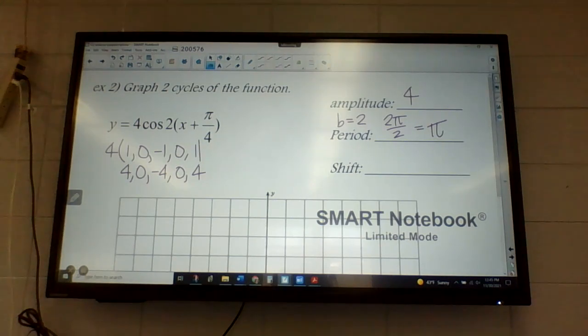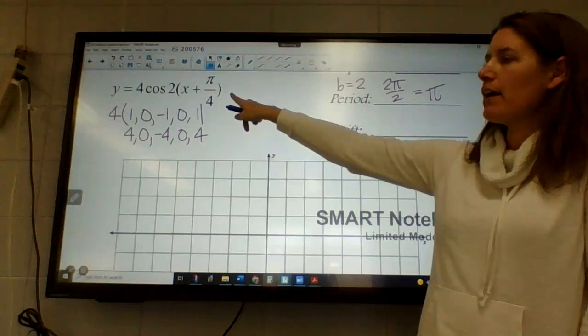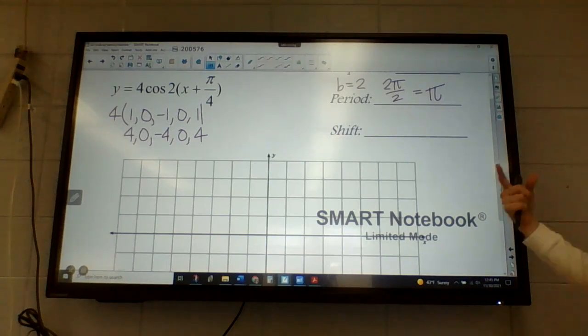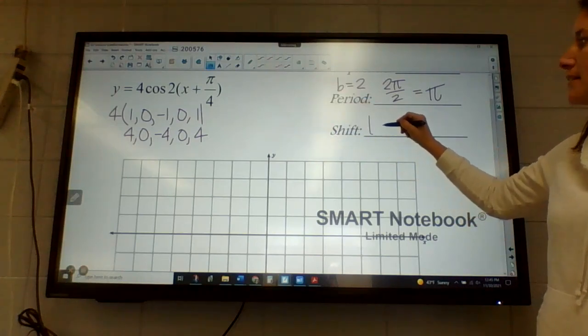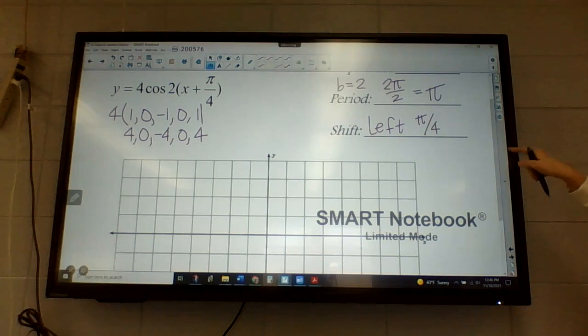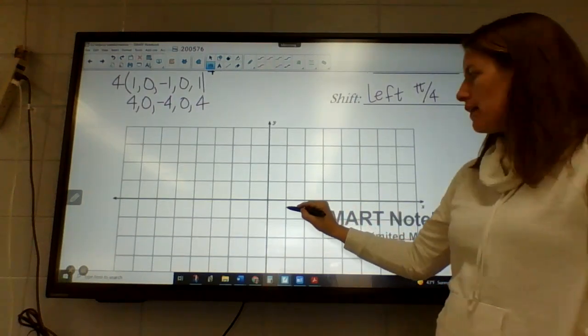So what are you going to put your scale as this time? Because our shift is pi over 4. Yeah, why not just use pi over 4? It's a nice small number that will allow us to fit this in. Now, are we going to move left or right this time? This one's left because it looks positive, but it's actually the opposite of what we're expecting. So again, since it's pi over 4, left pi over 4, that's what I'm going to do my scale as.